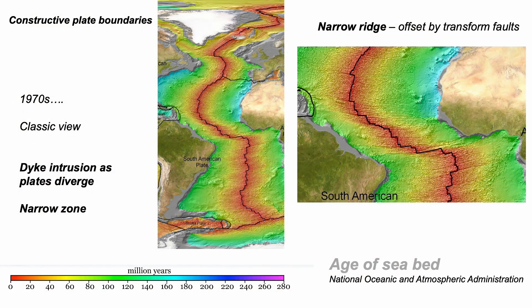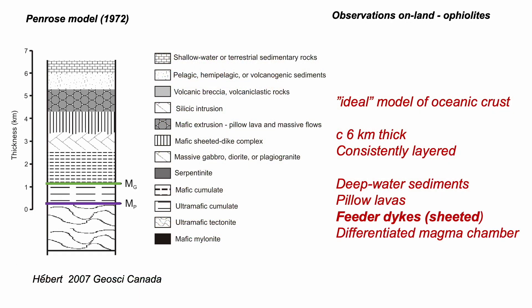So for many, the Troodos became the type example of oceanic crust, even though it's no longer part of the ocean floor. Although for some, it was debatable whether it was actually formed at a mid-ocean ridge at all, but that was very much a minority view. The Troodos went on to inform an ideal model of oceanic crust, agreed at a conference held in the early 1970s — the so-called Penrose model, published anonymously by the conference participants.